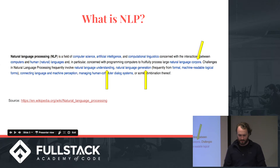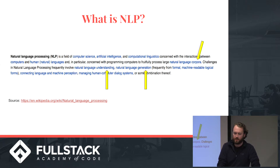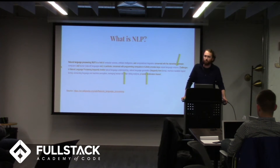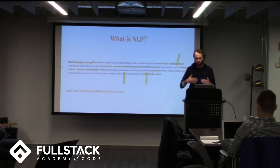This is a surprisingly concise Wikipedia definition for what natural language processing is. Natural language processing is a field of computer science, artificial intelligence, and computational linguistics concerned with interaction between humans and computers in natural human languages. Specifically, it's concerned with programming computers to process large natural language corpora. This means we want computers to process a large amount of written text or spoken human language and figure out rules based on that information — something we know a little bit about from machine learning.